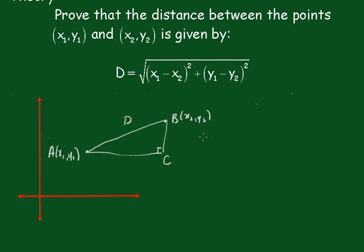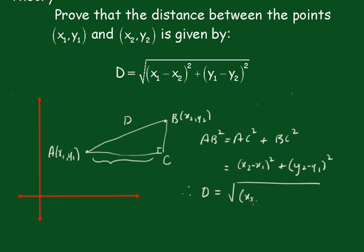And there's C. Now Pythagoras Theorem states that AB² will be equal to AC² plus BC². AC, this distance here, is going to be x₂ minus x₁, and BC is going to be y₂ minus y₁. Therefore AB, which is D, will be equal to the square root of (x₂ - x₁)² plus (y₂ - y₁)².